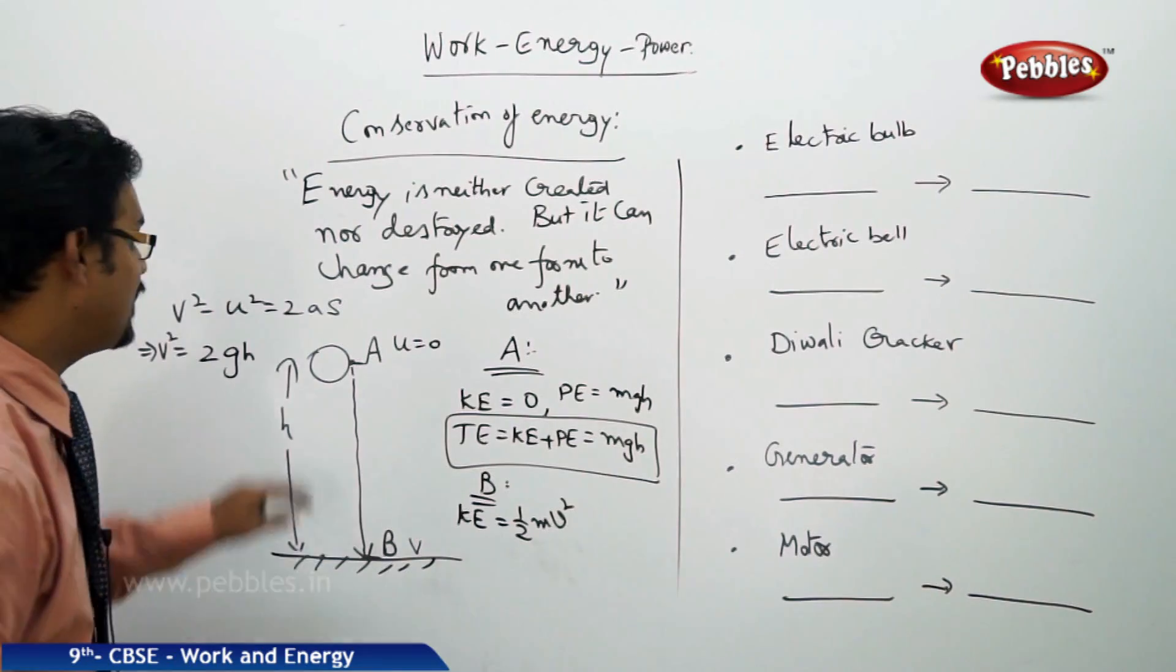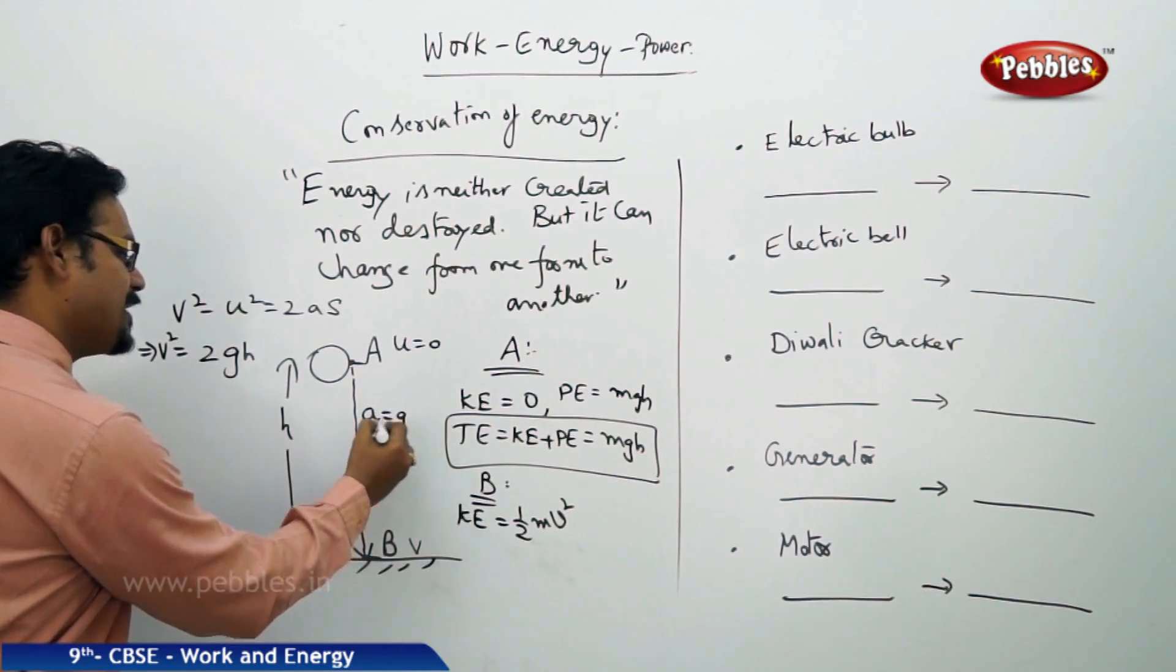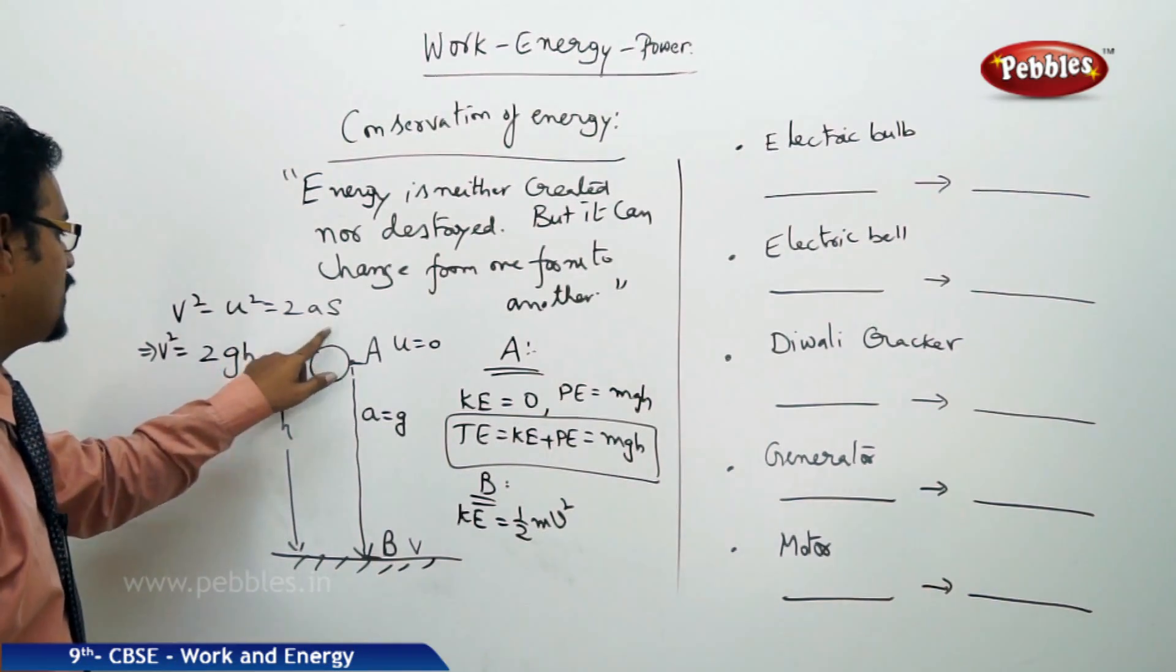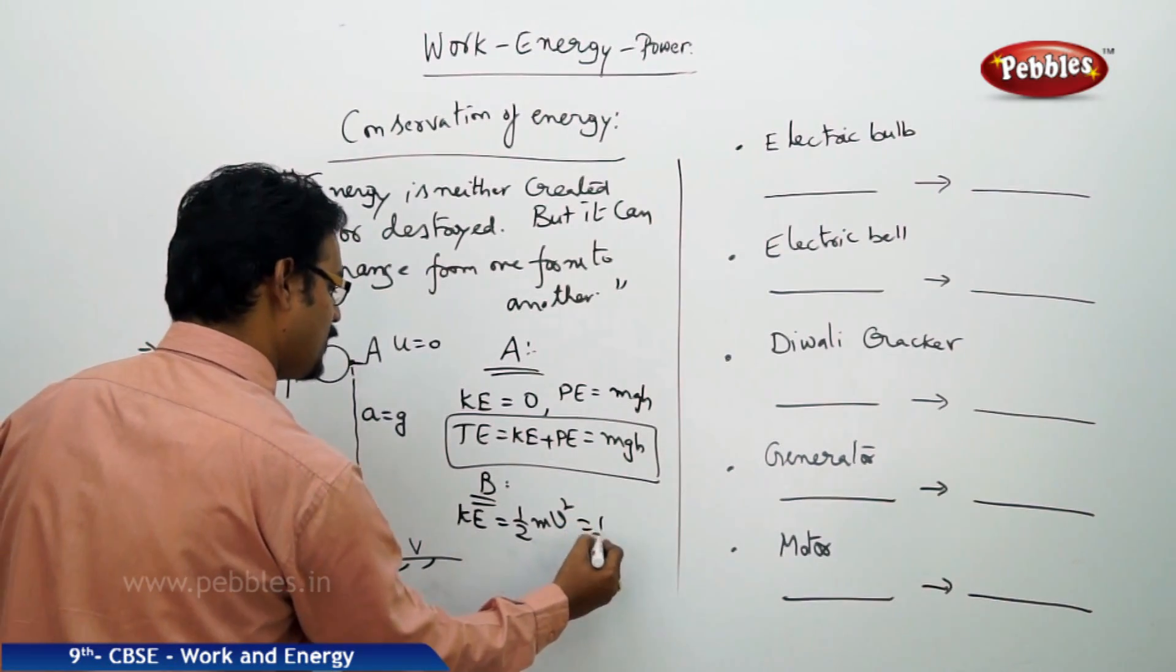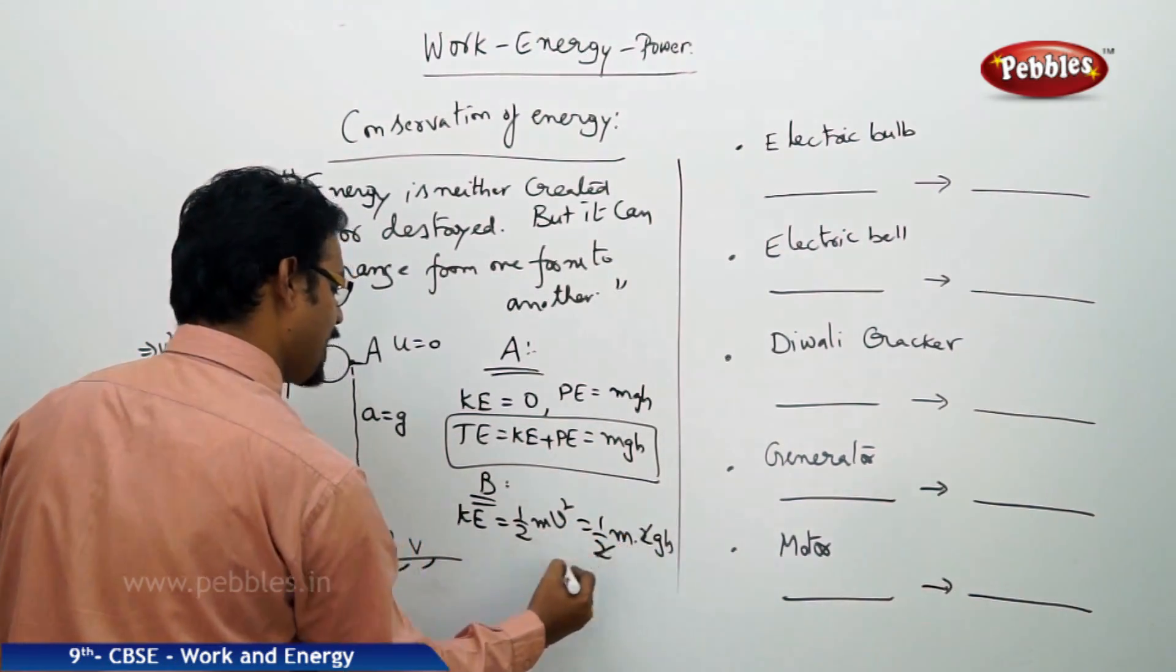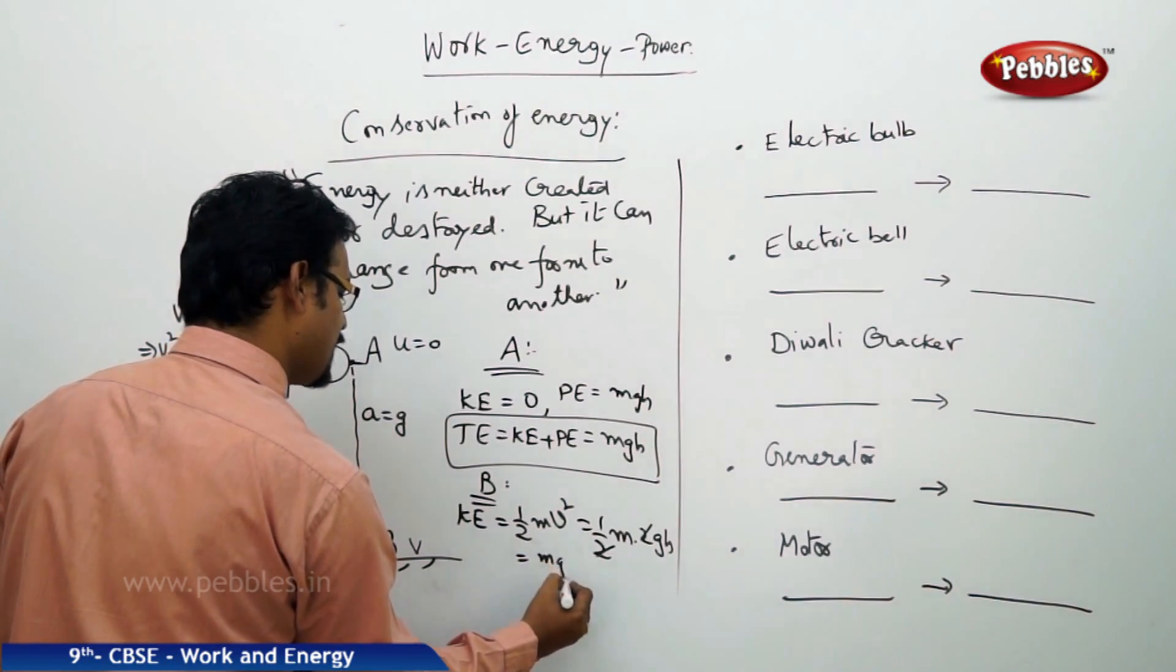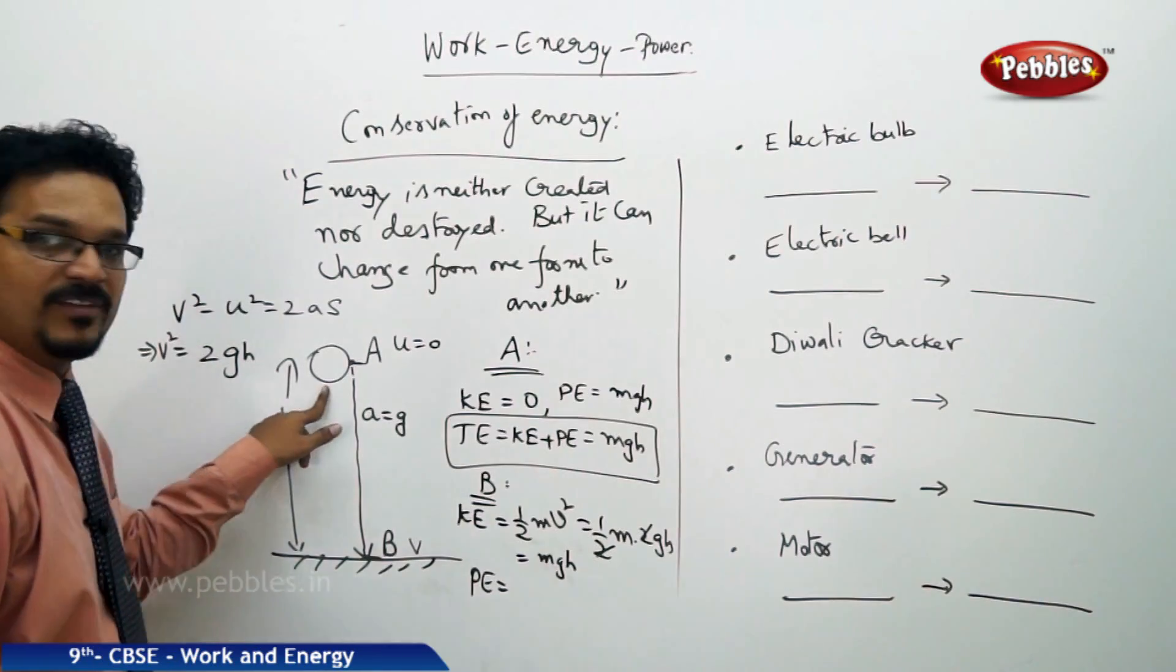U is 0, and s is nothing but H, so I can write V² = 2gh. Why did I mention g here? Because a is g; what is falling down has acceleration due to gravity. So V² = 2gh. I can supply here, so it is nothing but ½m(2gh), so KE is nothing but mgh.